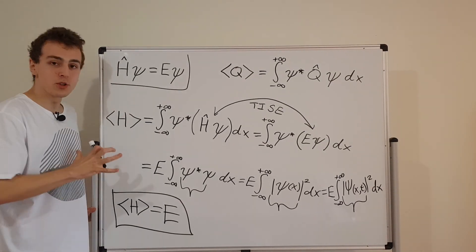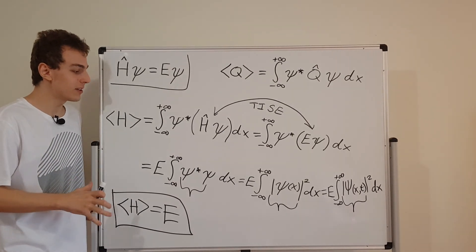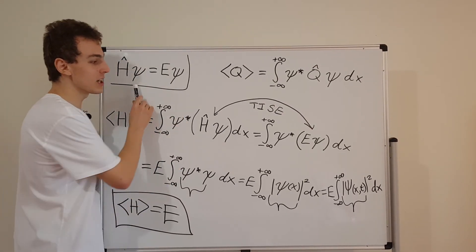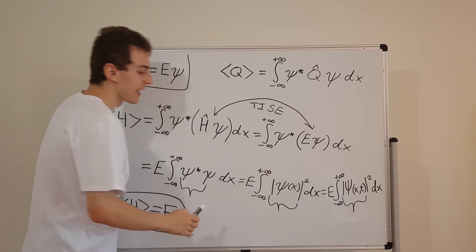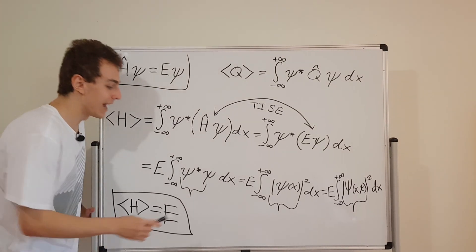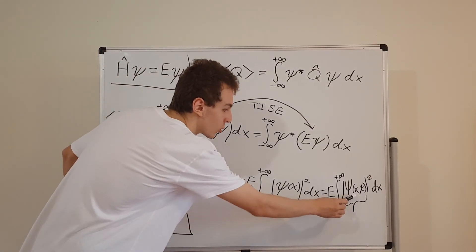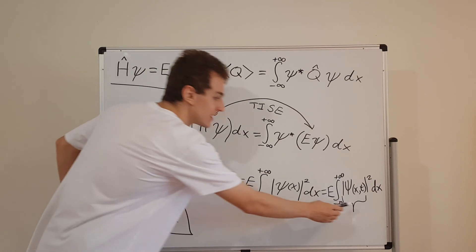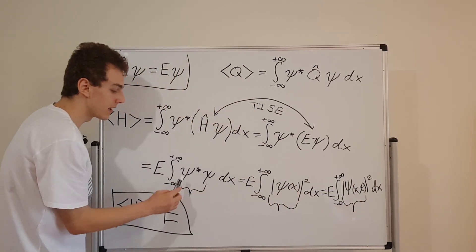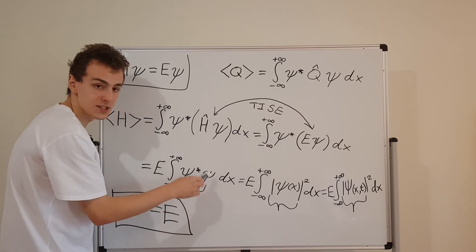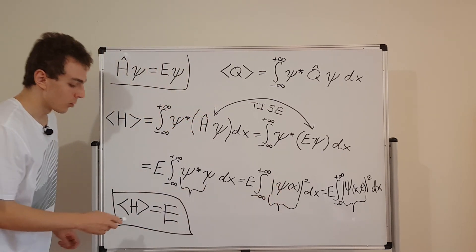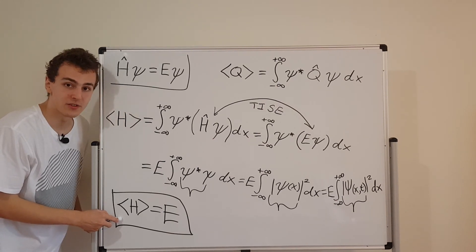The most important takeaway message from this video: you can use the time-independent Schrödinger equation inside the integral, and what you get is E multiplied by an integral that evaluates to 1. All of these forms — psi-star times psi, |Ψ(x,t)|², and the probability density function — are actually equivalent to each other. We're going to use this fact in later videos. Make sure you watch all the videos in the quantum mechanics playlist.